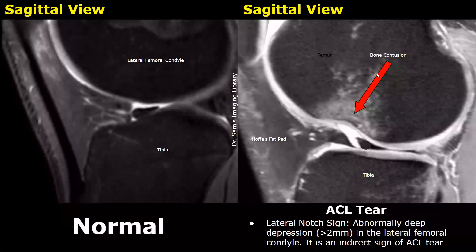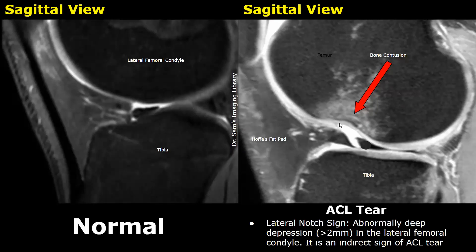In some cases of ACL tears, a lateral notch sign is present. Due to trauma, there can be an abnormally deep depression in the lateral femoral condyle. Its measurement is usually more than 2 millimeters. It is an indirect sign of ACL tear.